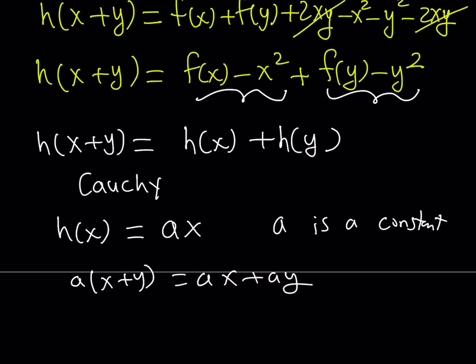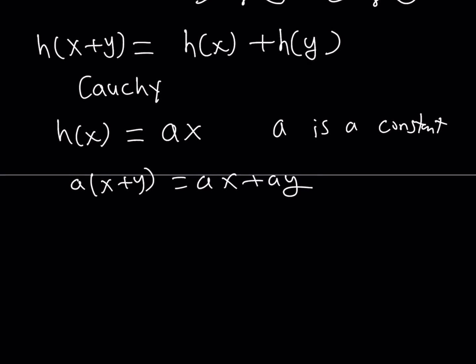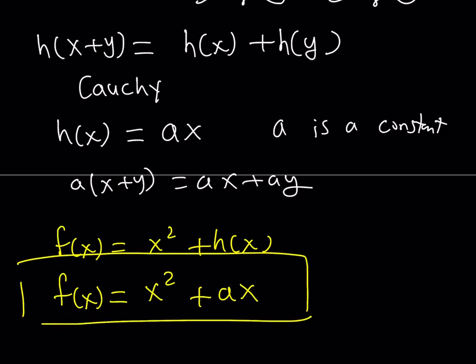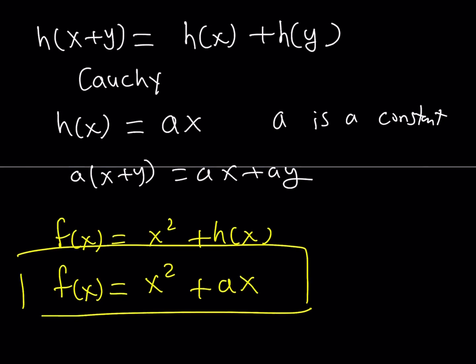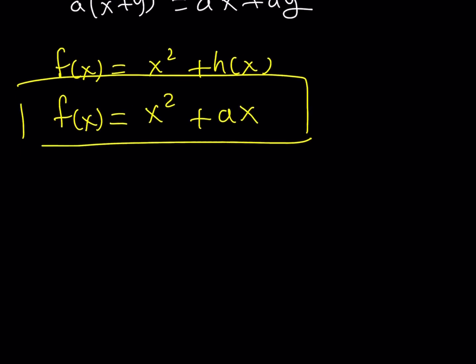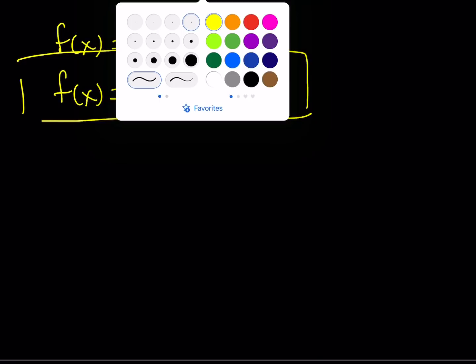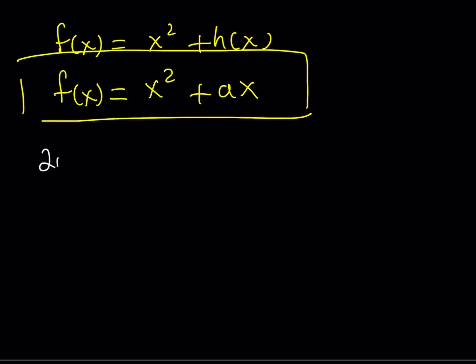Great. So, since h of x can be written as ax. And in the beginning, if you remember, I assumed that my other solution could be written like this, x squared plus h of x. So, we got another solution here, which is x squared plus ax. And when you plug it into the original equation, in addition to x squared, you're going to notice that this equation also satisfies the original functional equation that we have. All right. Now, let's talk about the second method and see how that works.